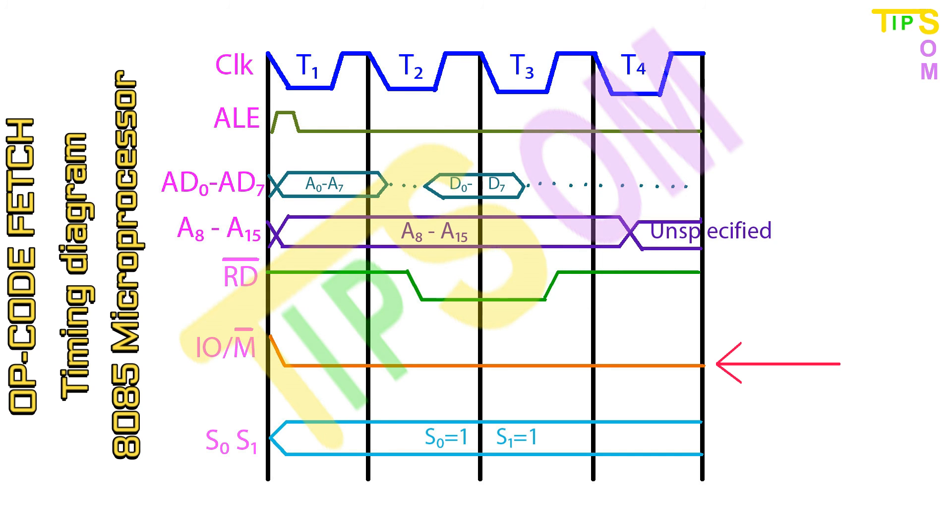The next one is IO slash M. As I mentioned earlier, this is the memory related operation or the input-output related operation. As here no memory operation is going on, after some time in the first clock pulse it is high. And then it becomes low for the rest of the time. Next one is S0 and S1. As here it is Opcode FETCH, S0 and S1 will be 1-1.